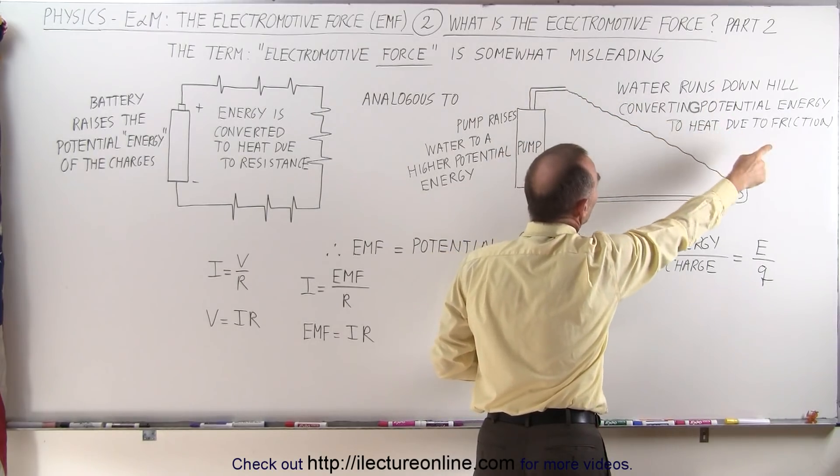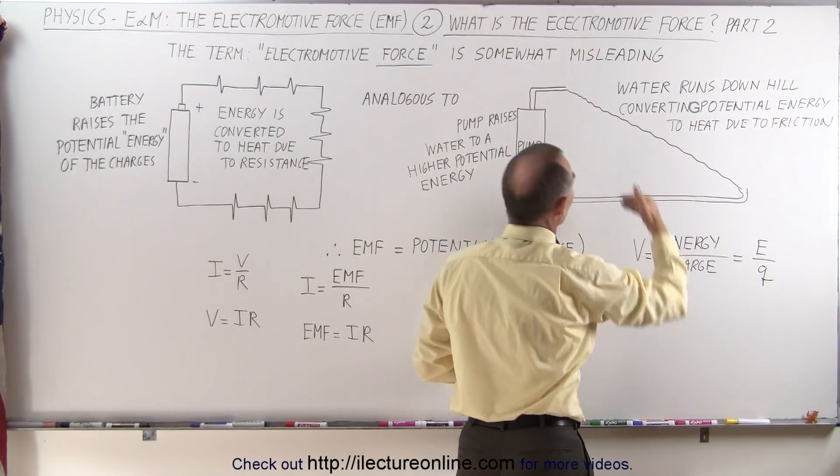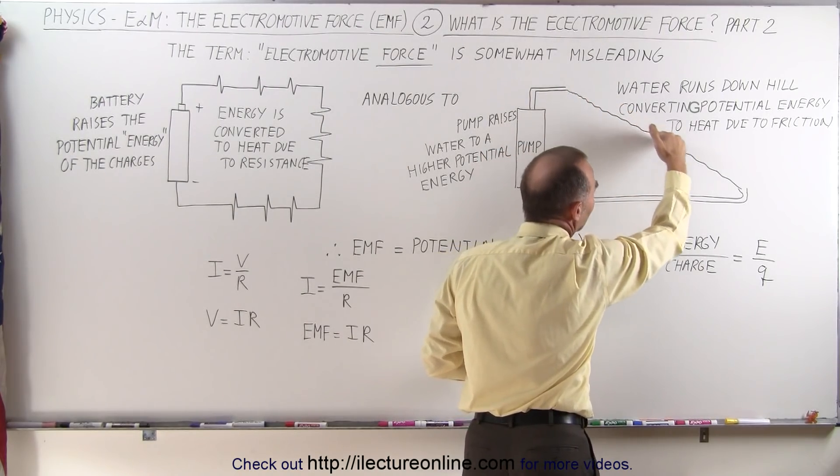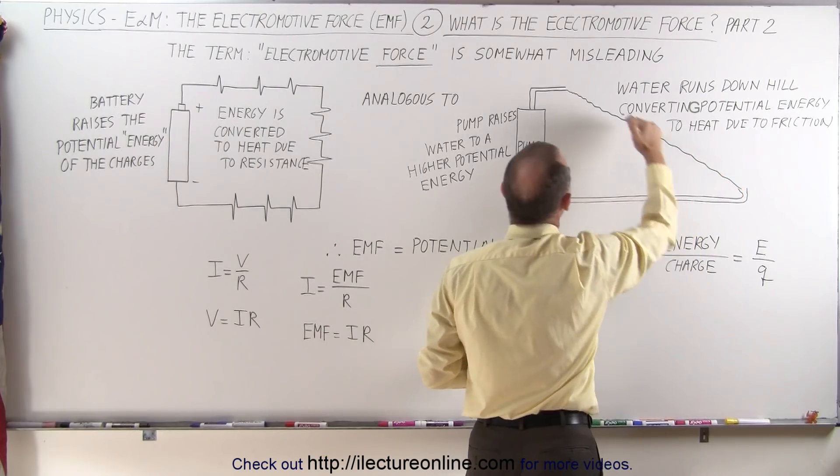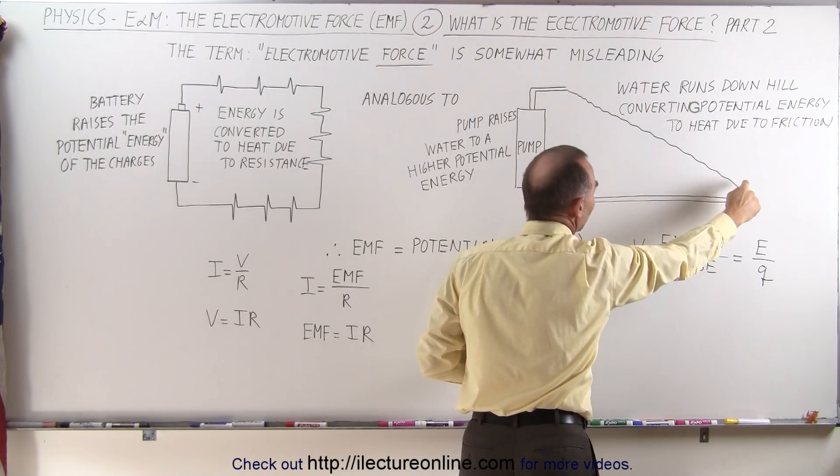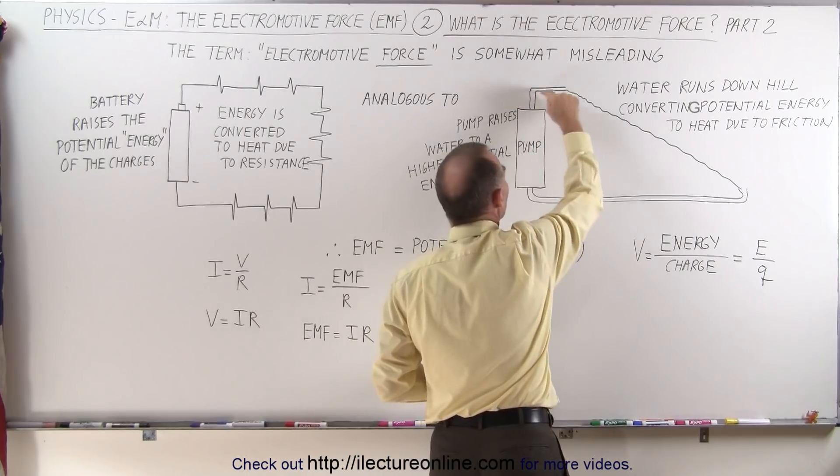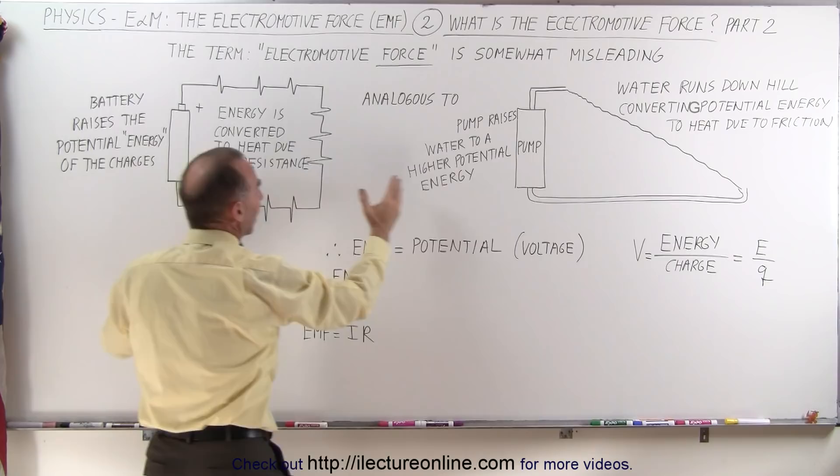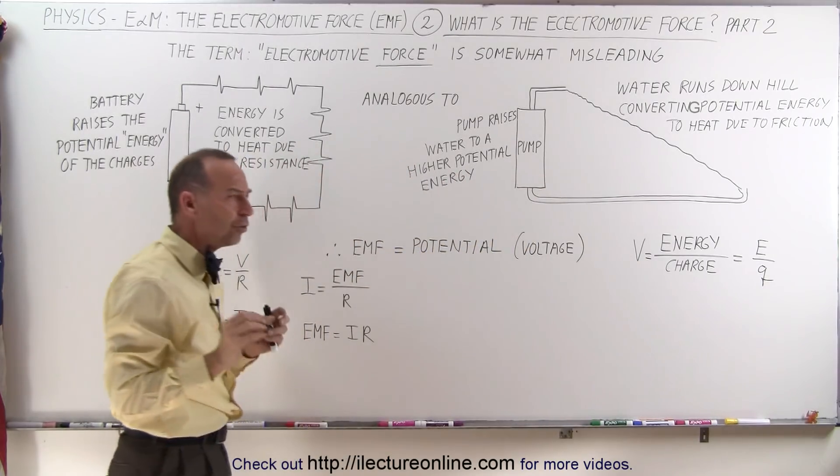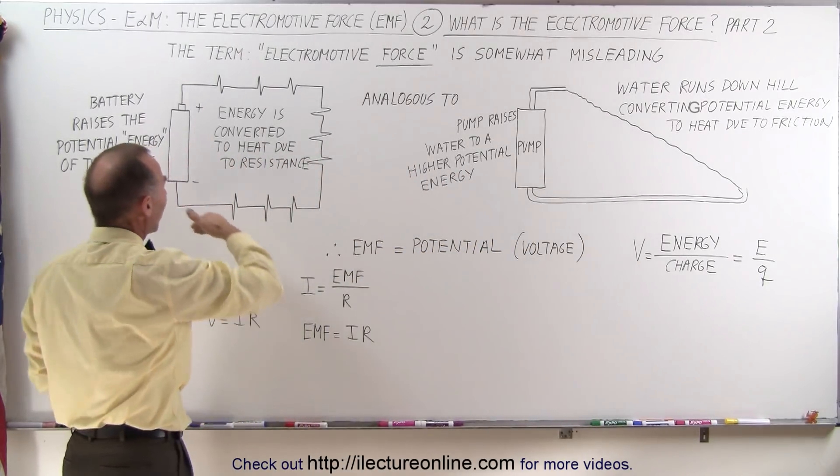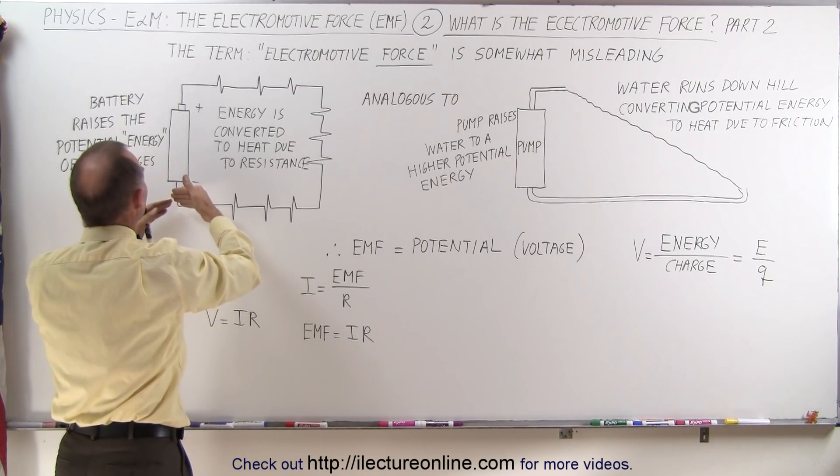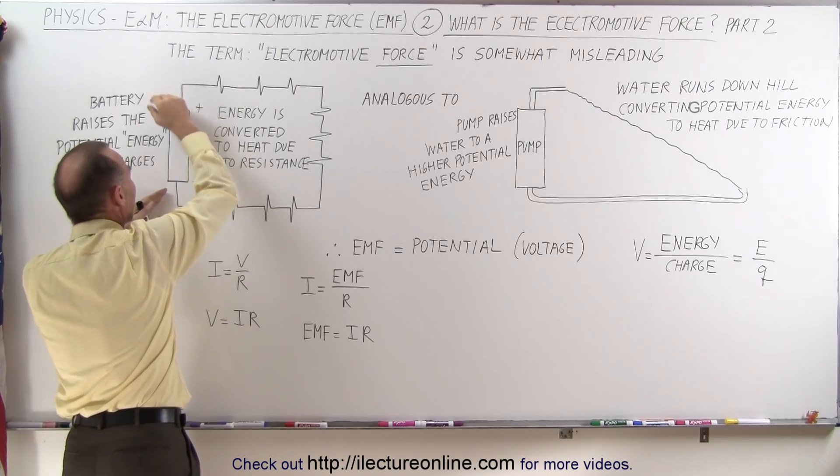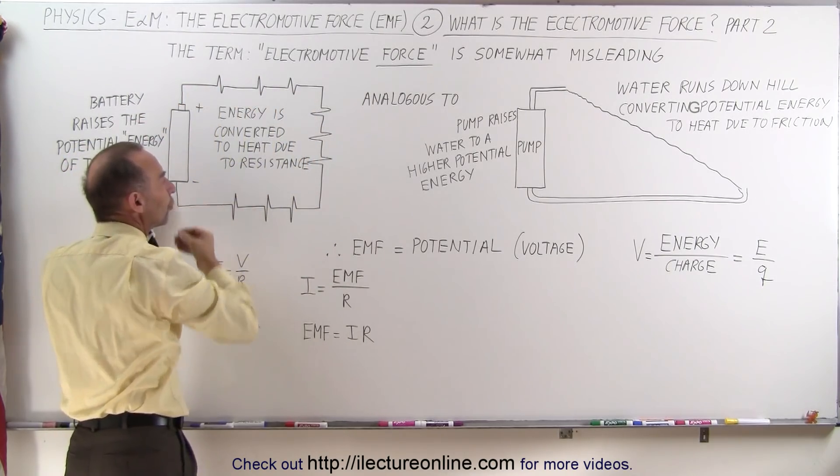The water converts potential energy to heat due to friction as it runs down the hill, meeting resistance along its path. By the time it reaches the bottom, all that potential energy has been converted to heat. The pump will then pump it back to the top. There are many analogies between what's happening here and there. What drives charges through the circuit is something that causes them to gain a higher potential, and it's that higher potential that drives the charges through.